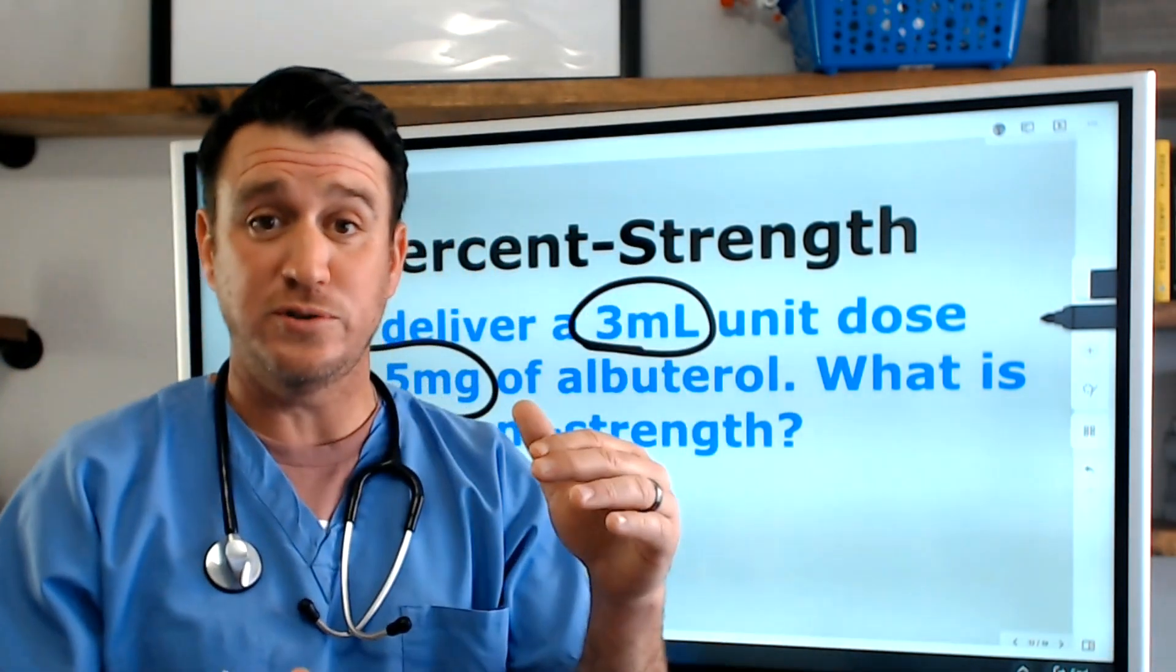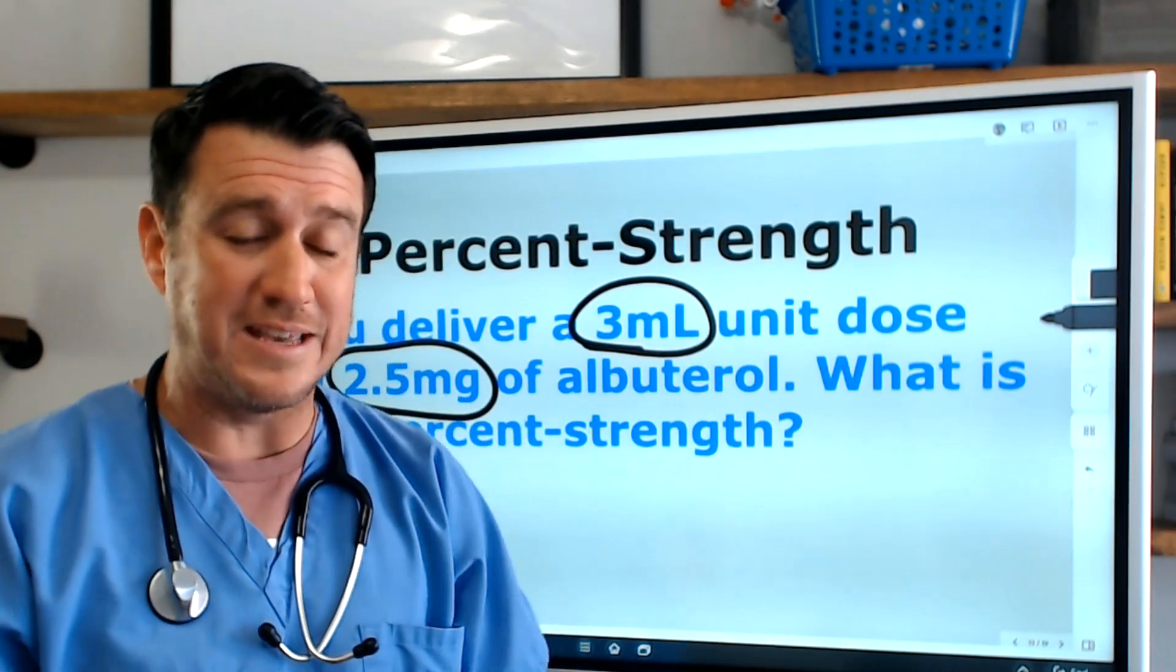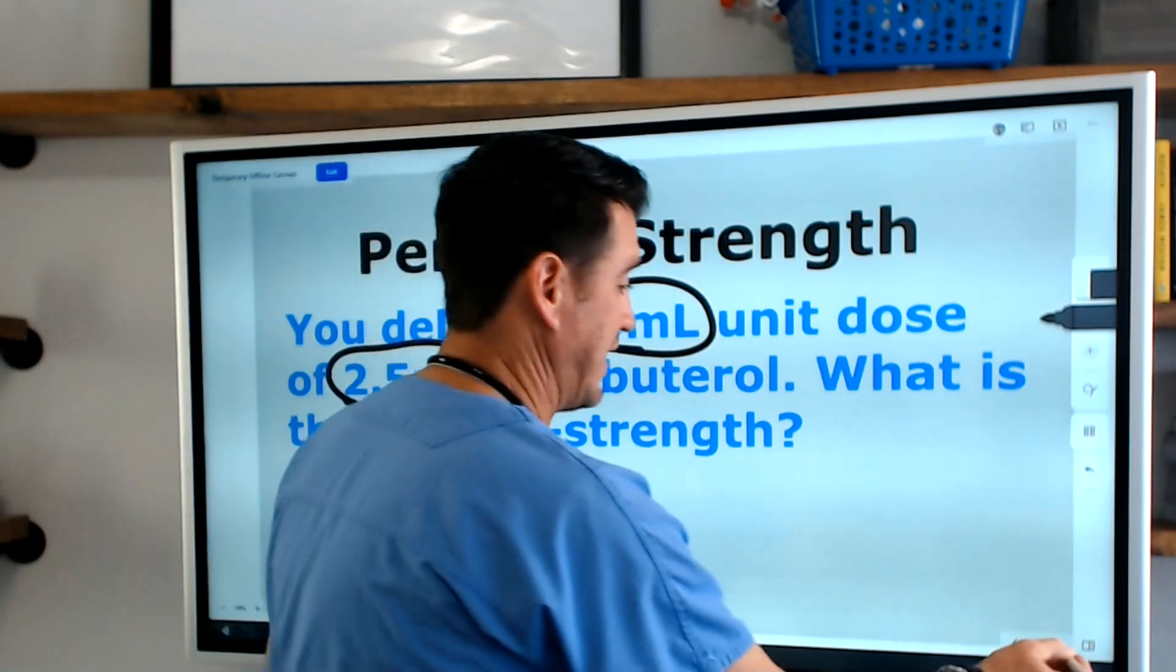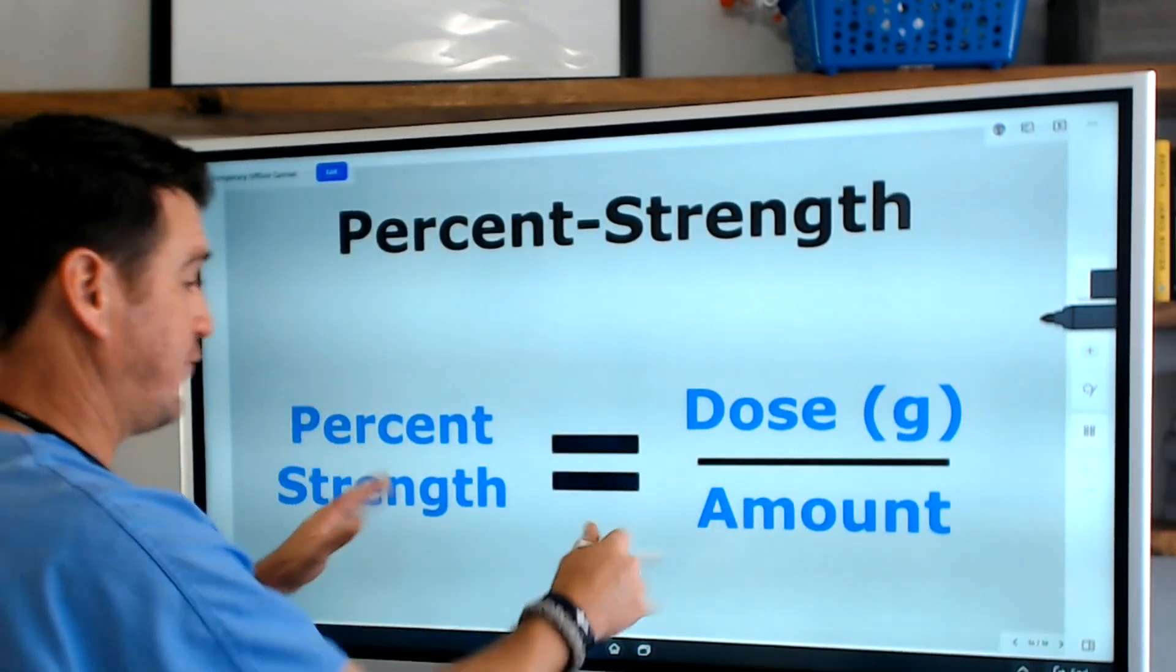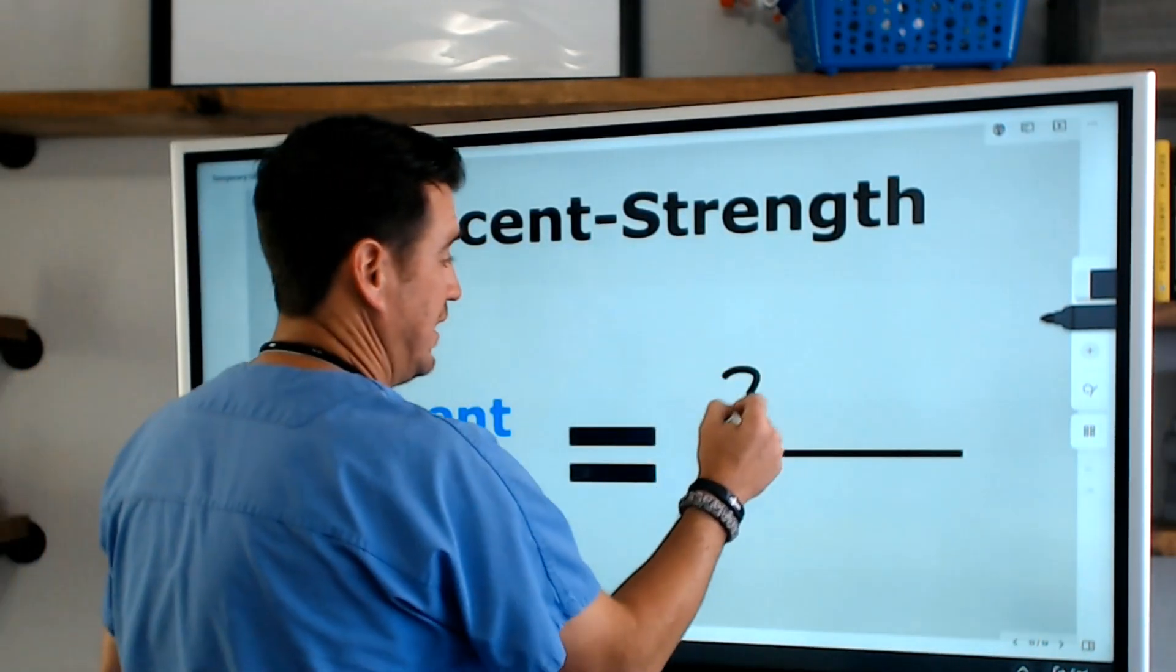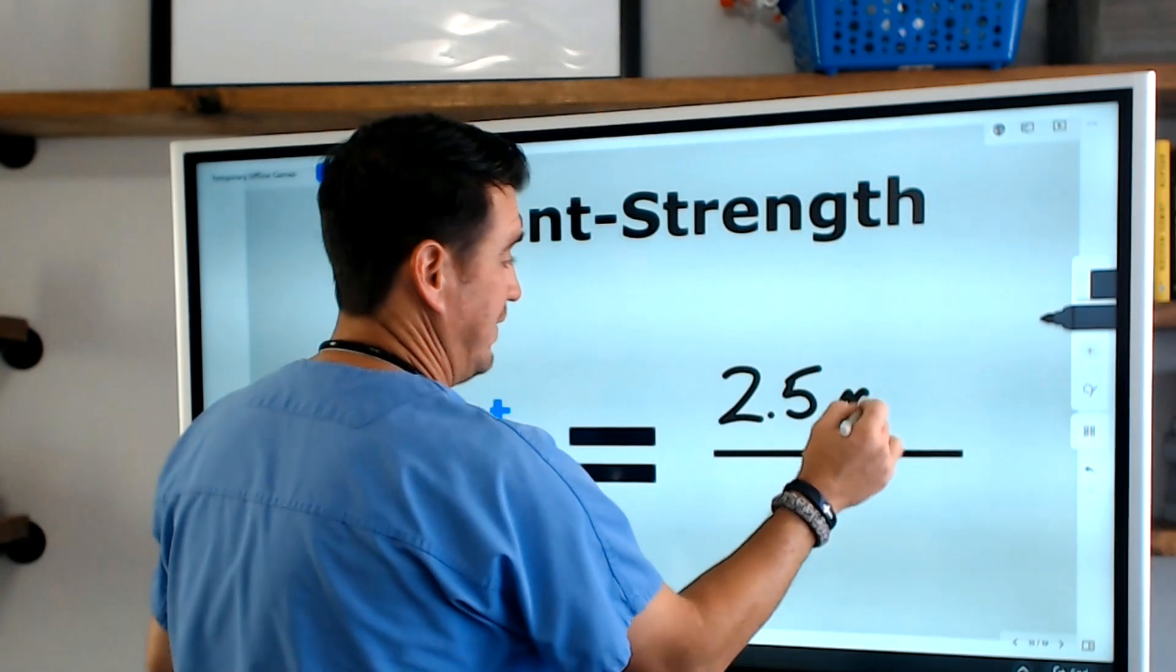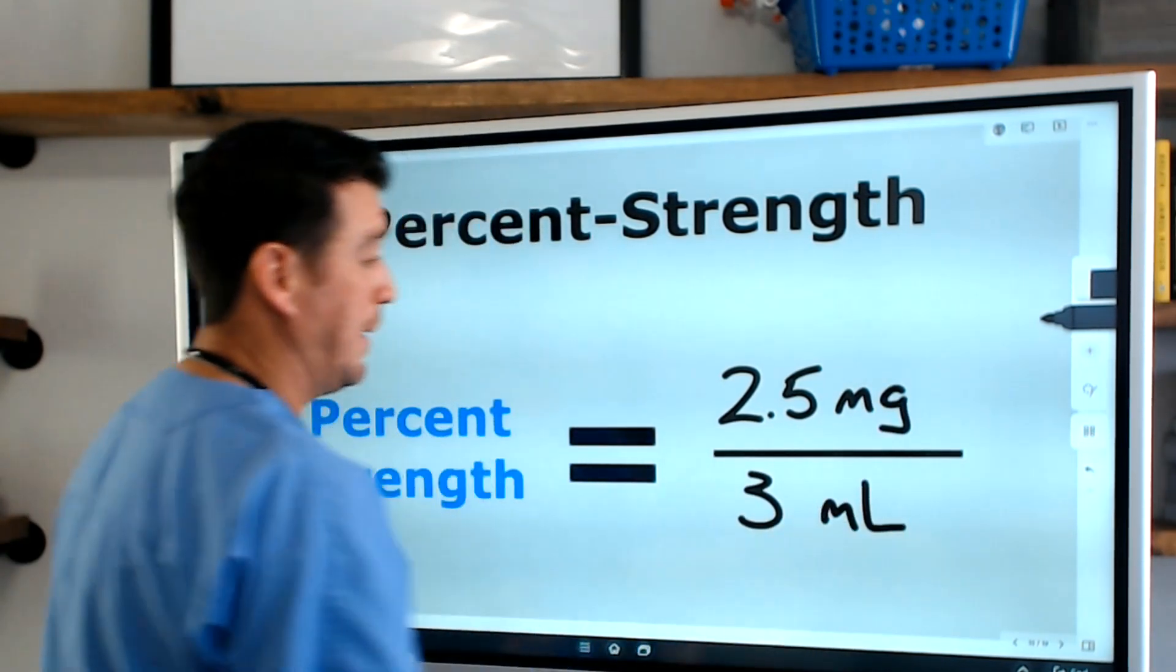Now you have your dose and you have your amount, now we can calculate the percent strength. So we go back to the formula and we just have to plug in our values: 2.5 milligrams over 3 milliliters.